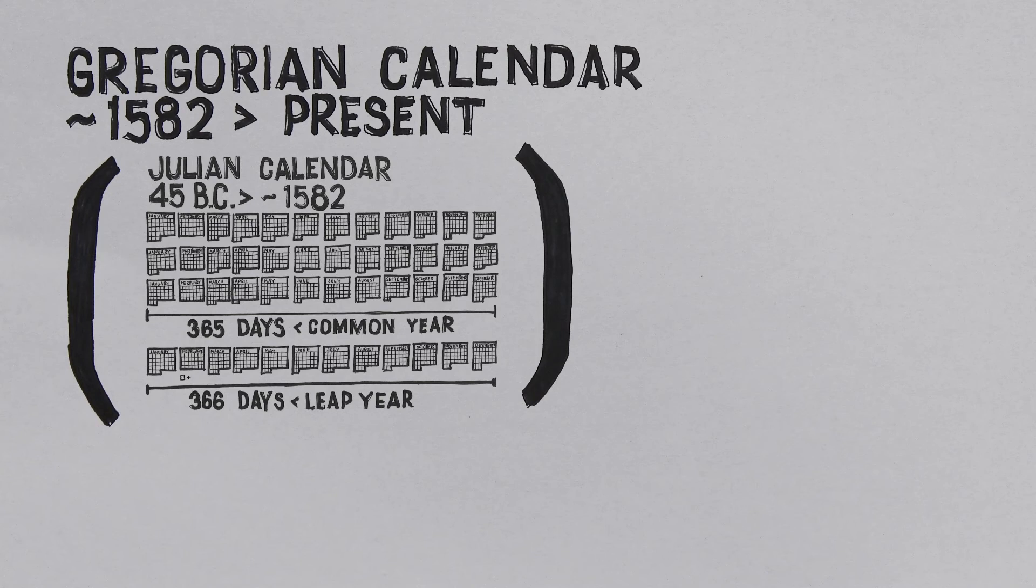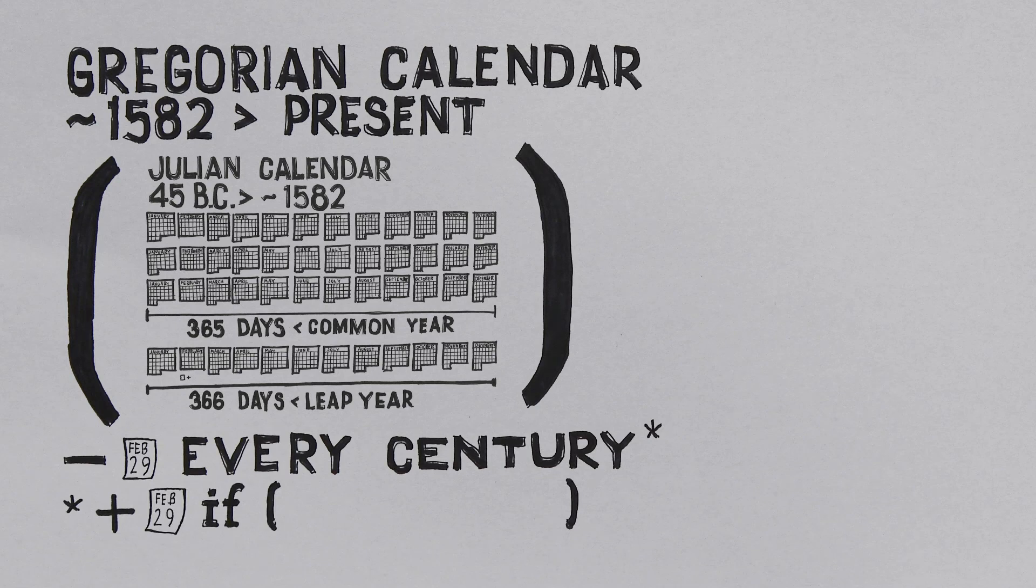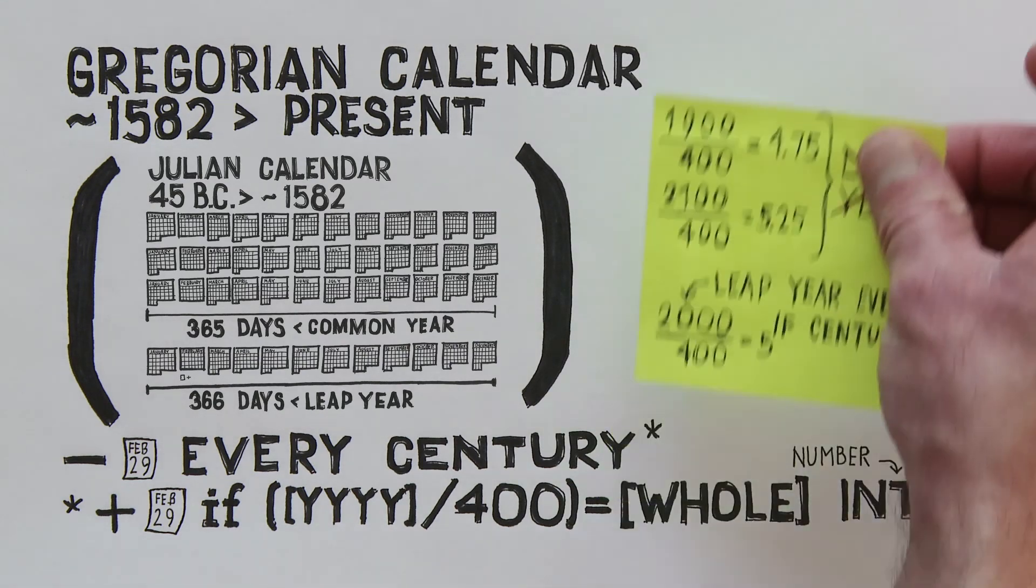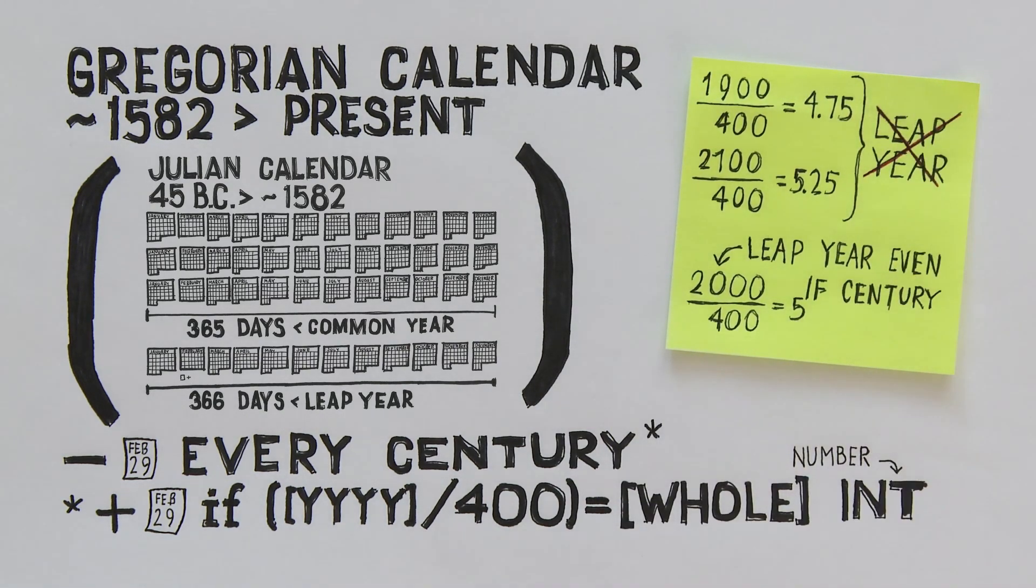10 minutes over a long enough period of time adds up, and the Gregorian calendar we use today, will skip that leap year every 100 years, unless the year is divisible by 400. So 1900 and 2100 aren't leap years, while 2000 is. Or was.